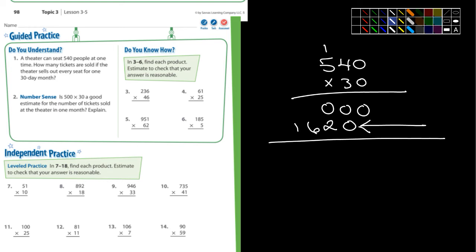Notice how I kept things lined up. And now I just simply add everything up. So the first one I'm looking at, what's zero plus nothing is zero. Zero plus zero is zero. Two plus zero is two. And then the six and the one. And now I can just simply put the comma and we have 16,200 as the answer for number one, 16,200.